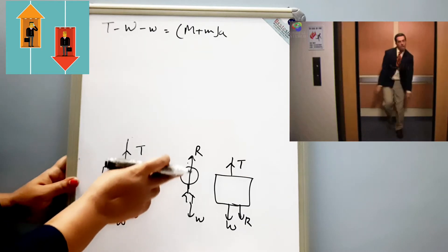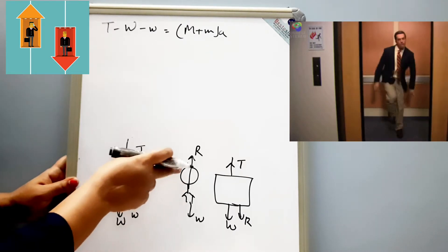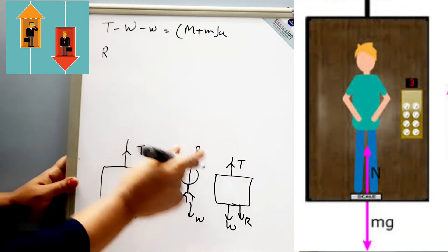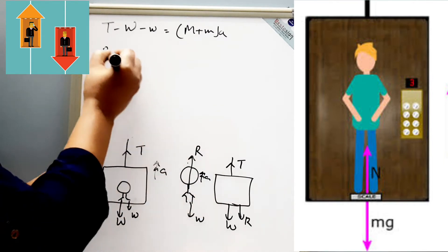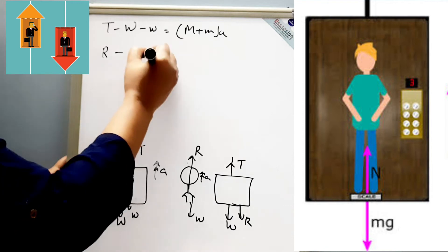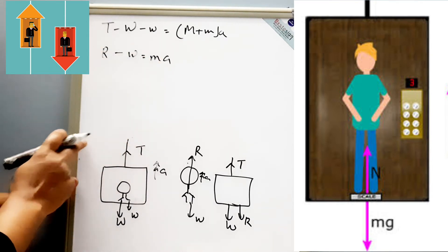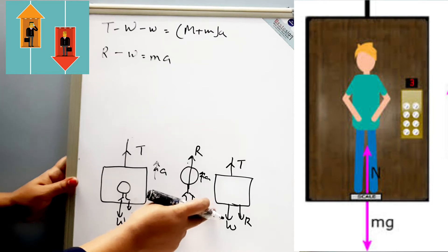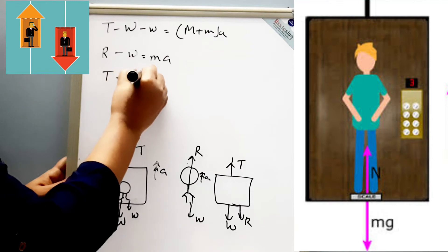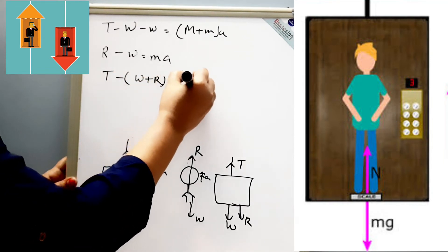Now we will see what forces act on the person when the lift is accelerating upward and what the force equation is. For the person, since it is accelerating upward, the equation will be: R minus w equals mA. For the lift separately, the equation will be: T minus W plus R equals MA.